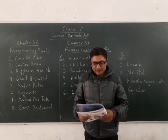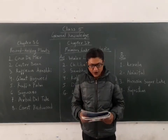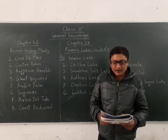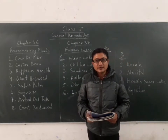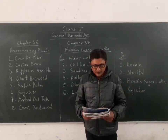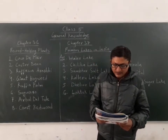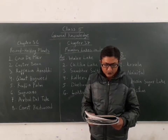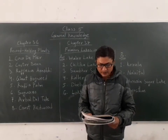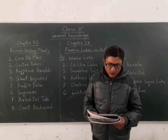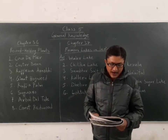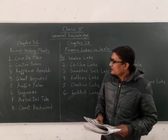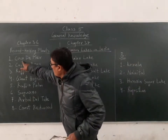In this chapter we identify the following record holding plants and write the answer using the help box. First description: it is the largest seed, which can grow up to 30 cm long, measures 1 meter in diameter, and weighs up to 18 kg. The answer is Coco de Mer.